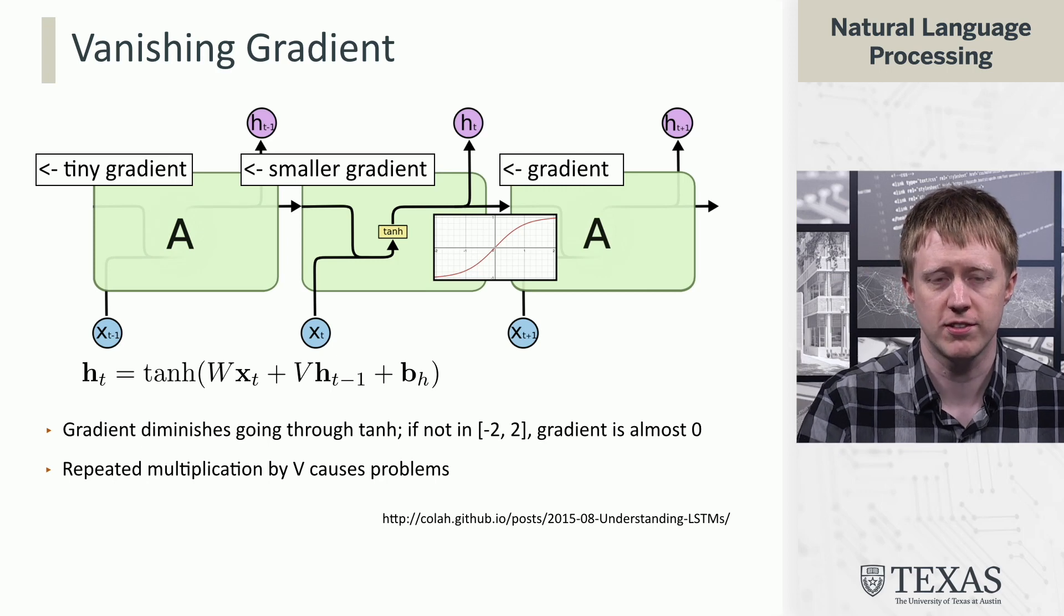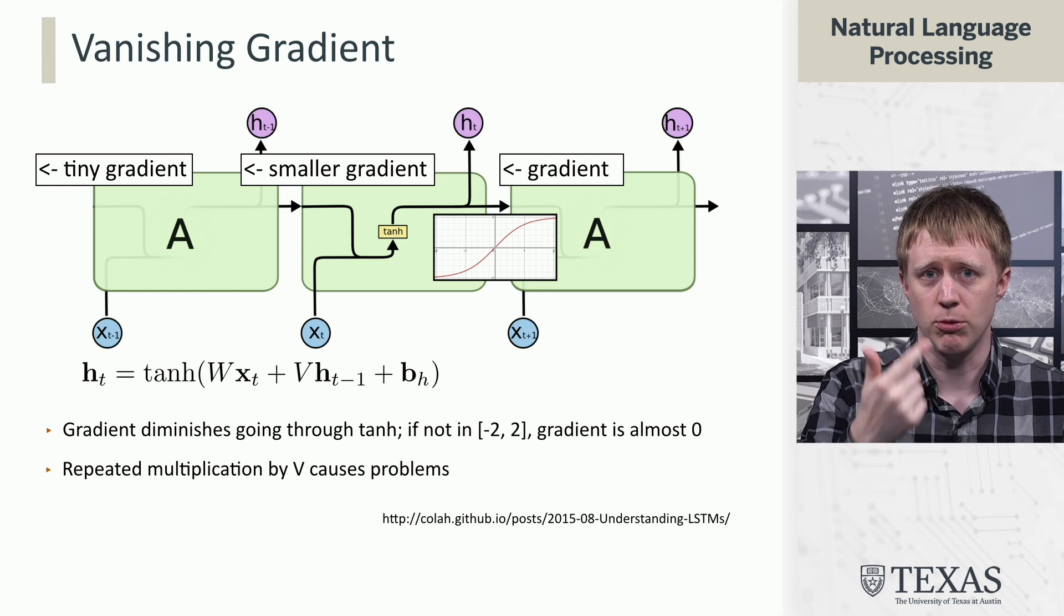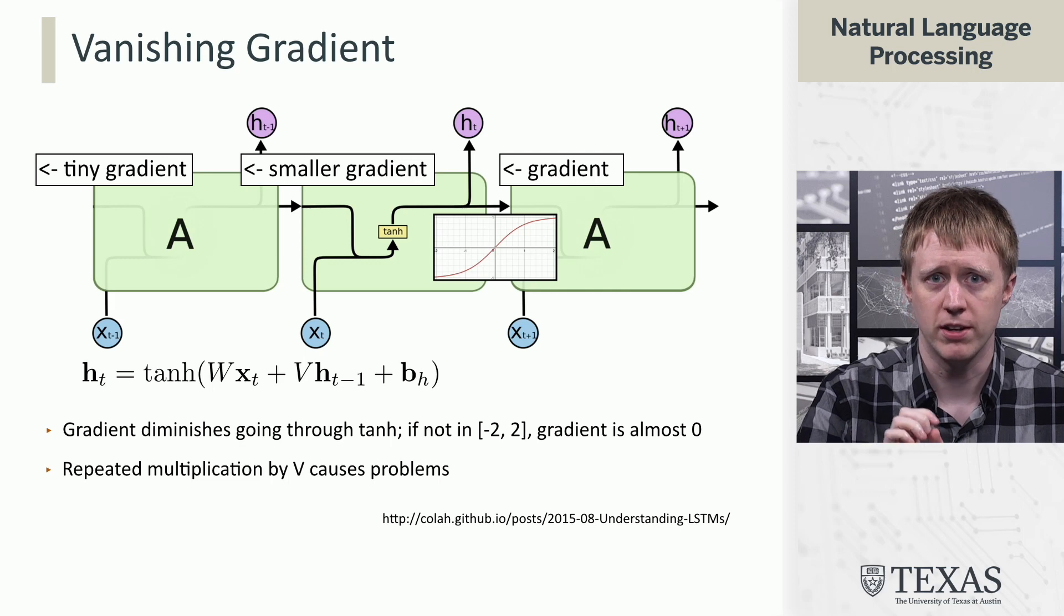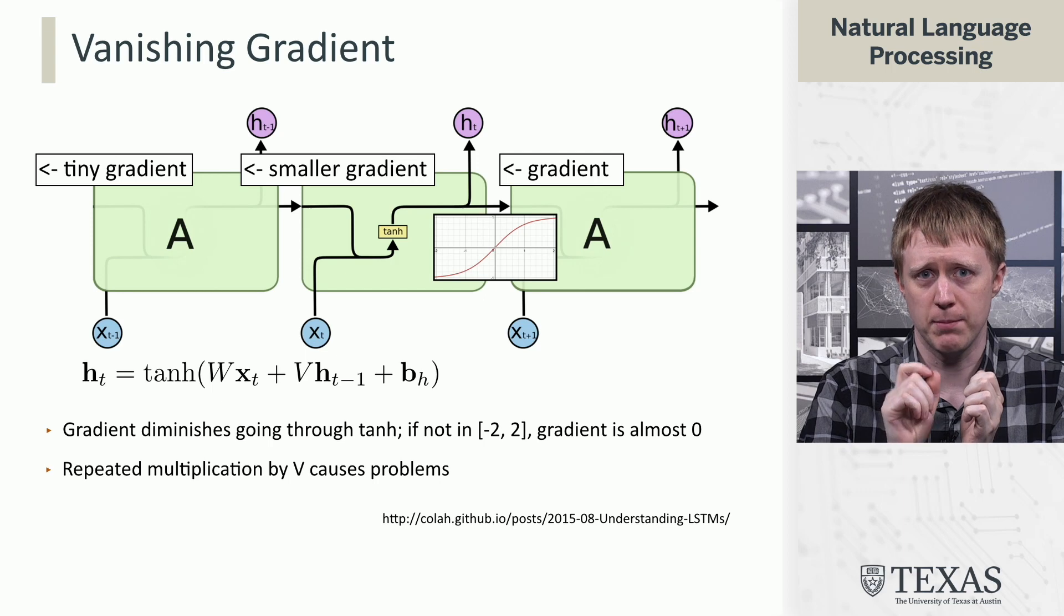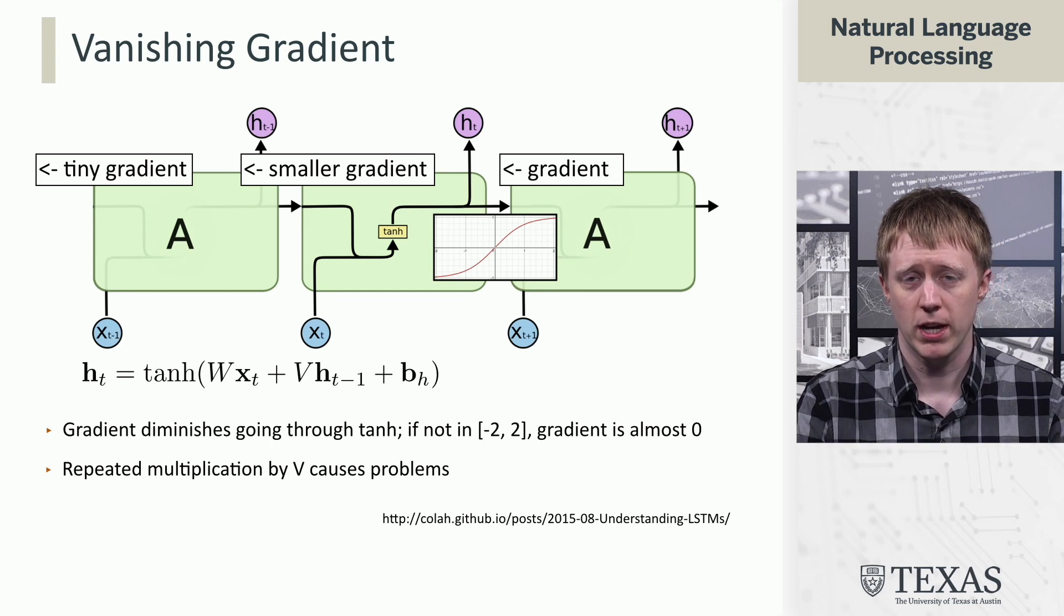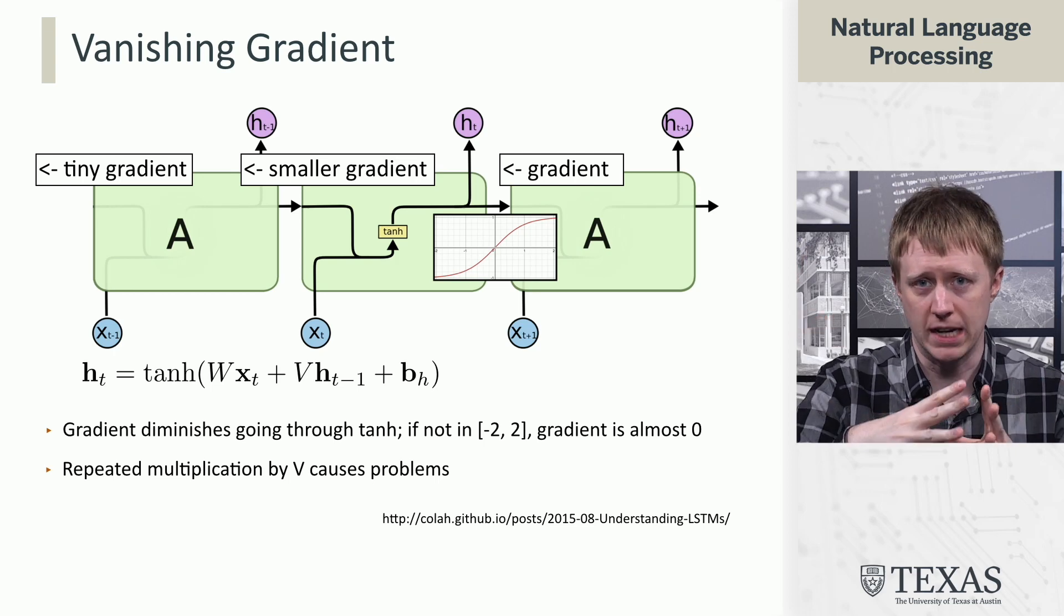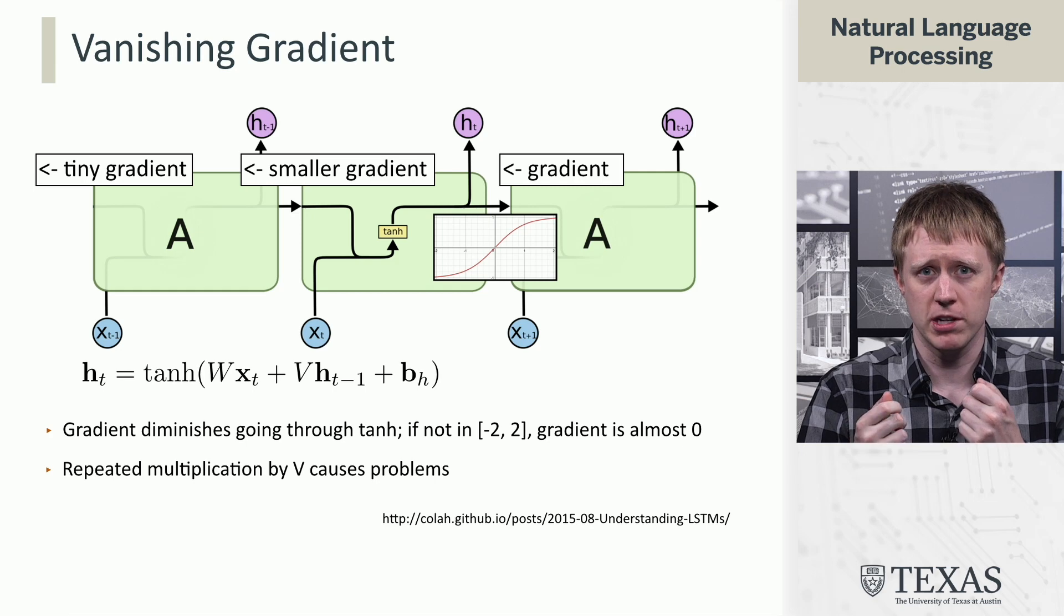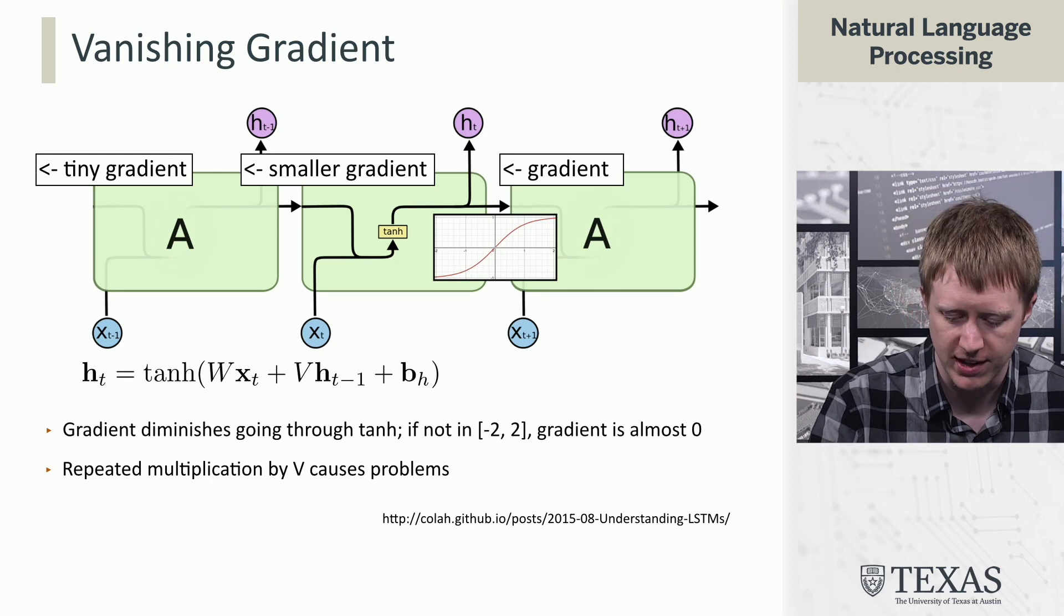There's another problem here. If you ignore the tanh and look at what's going on with the h's, we have h_t equals tanh of v times h_{t-1}. So over time as you scroll through a sentence, you're repeatedly multiplying by this v matrix many times. That can either cause h to blow up or shrink depending on what the eigenvalues of v are. That's also going to cause problems. So we have multiple reasons why it's going to be hard to have gradients give us information over long time scales of these networks.